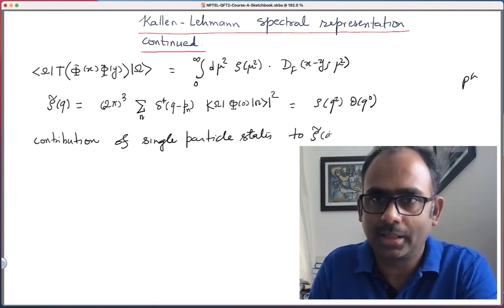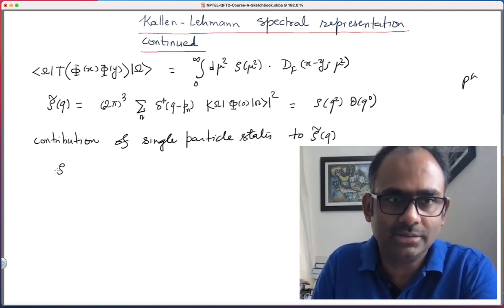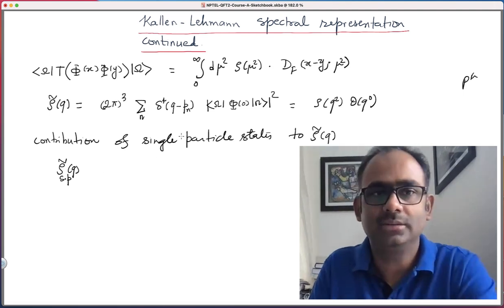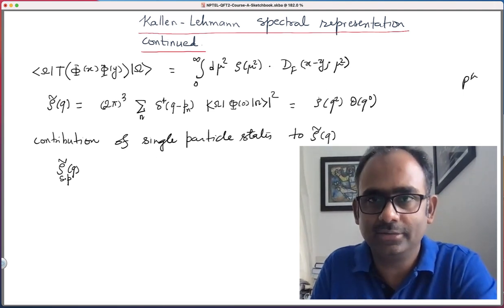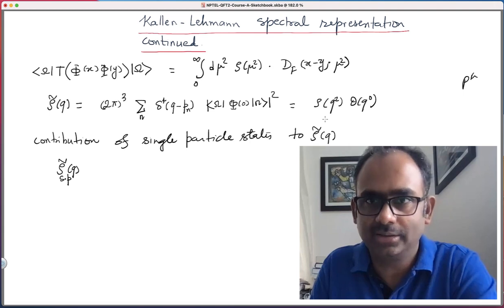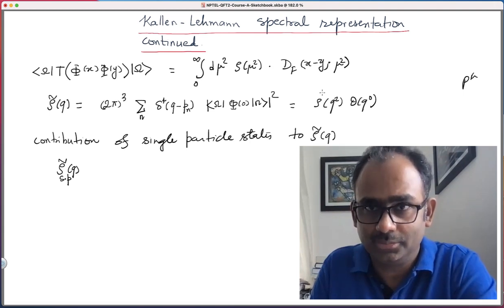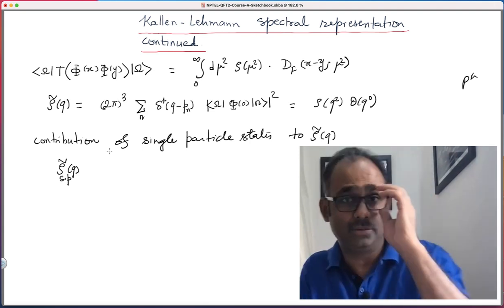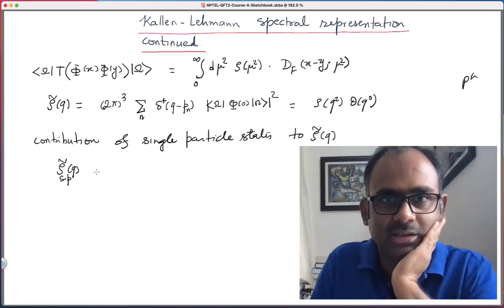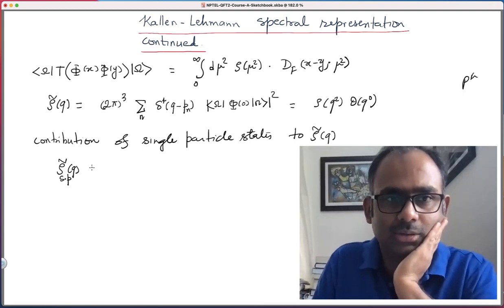So contribution of single particle states to rho tilde of q, and these contributions I will call as rho tilde q single particle. And similarly rho of q square, I will define rho single particle with this argument q square. So that is what we are looking at. So what is that object?